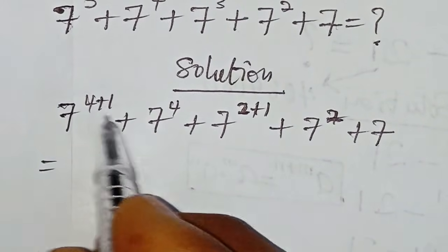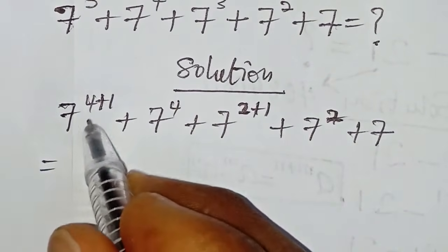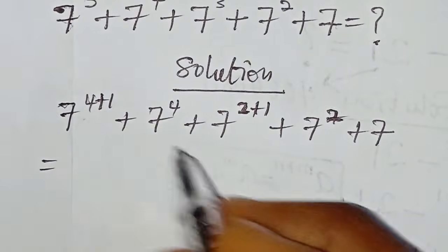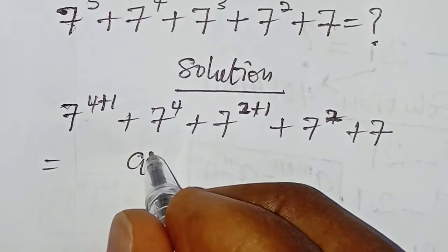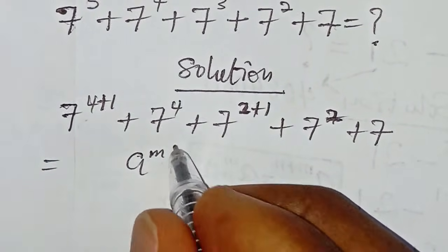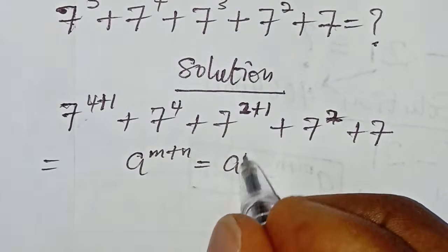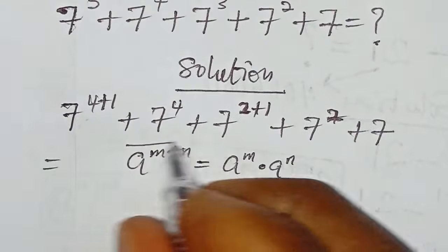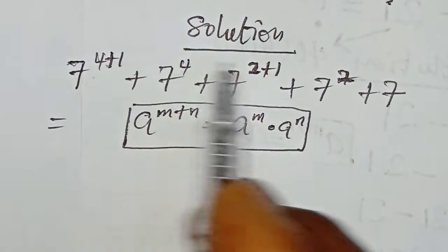From here, we need to separate these powers. To do that, we use the exponent identity: a to the power of m plus n equals a to the power of m multiplied by a to the power of n.